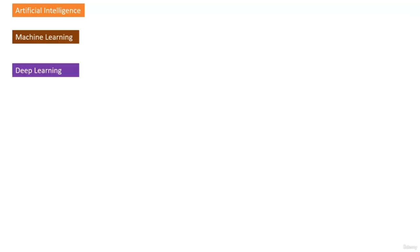In this session, we are going to understand the technology behind ChatGPT — transformer technology and neural networks. ChatGPT is essentially an artificial intelligence system. Machine learning and deep learning are the technologies that enable artificial intelligence, with deep learning being a more advanced form of machine learning. Both machine learning and deep learning learn from past patterns in data to predict the future.